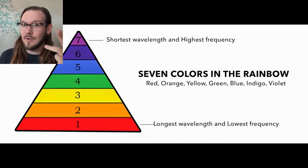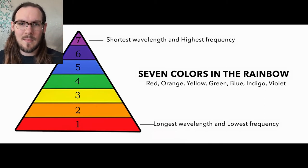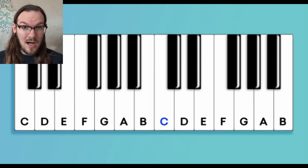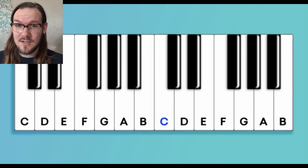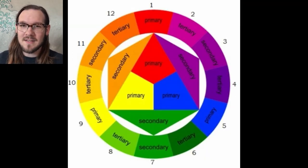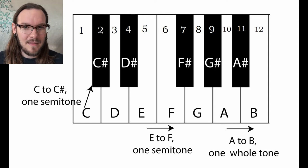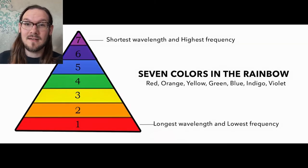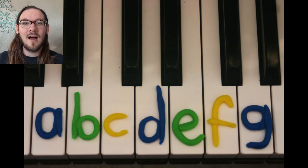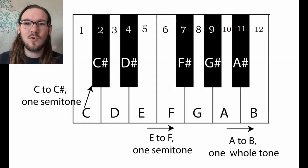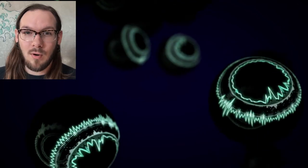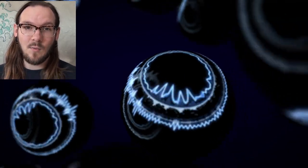In color you can separate those primary colors into semitones, and there are 12 semitones in the color wheel. In music there are also 12 semitones in every chromatic octave. So we've got seven primary colors and seven primary musical tones, and 12 semitones in both color and a chromatic octave of music.